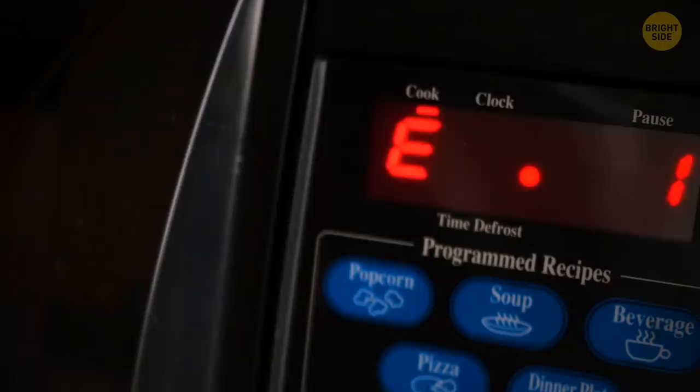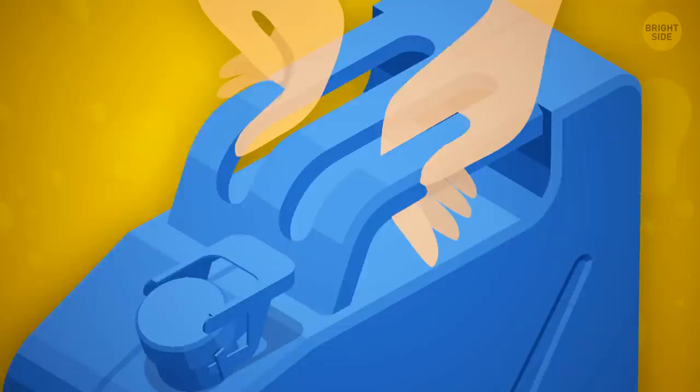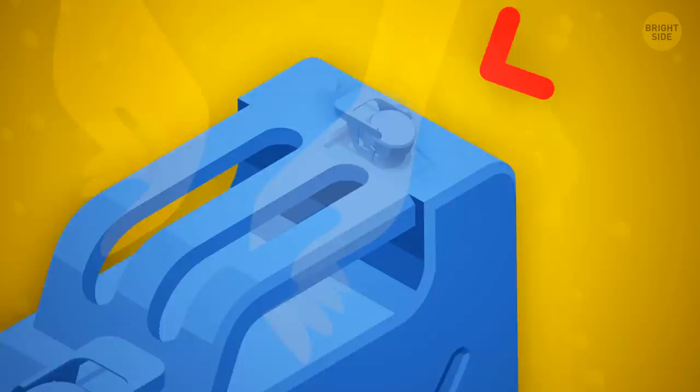A triple handle on a jerry can is there to make it easier for two people to carry it and distribute the fuel evenly. Gas cans often have a second hole that actually needs to be uncapped too before you pour the gas. The air passage will prevent it from glugging out, so no more fuel waste.